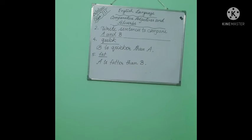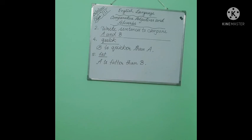Quick — we only need to add -er to make it comparative: quicker. Fat — to make it comparative we double the last letter T and add -er: fatter. This is because vowel and consonant are both present together. That's why we double the letter T and add -er. A is fatter than B.